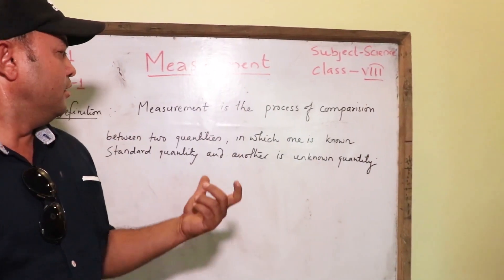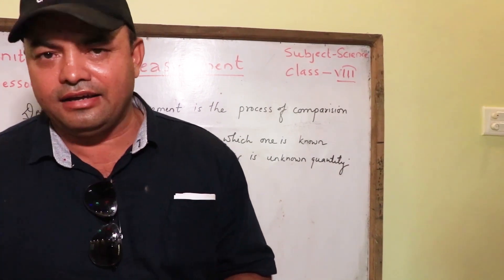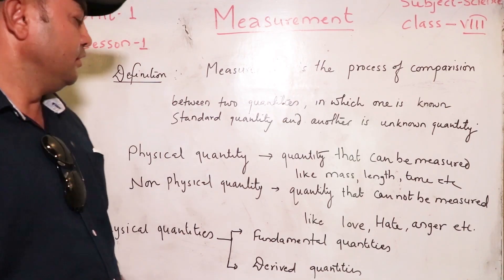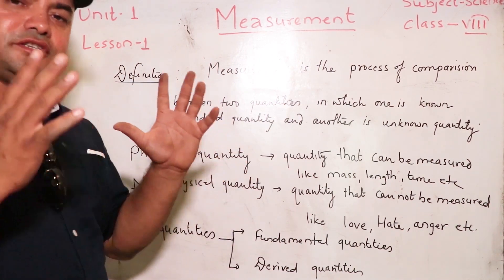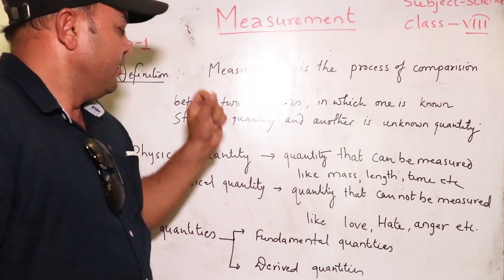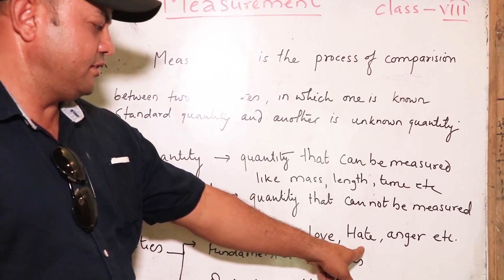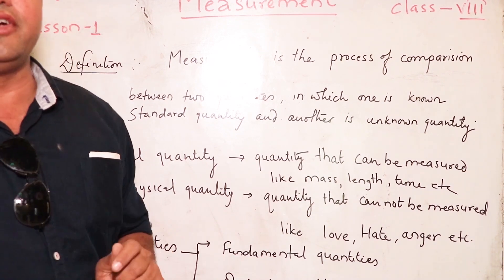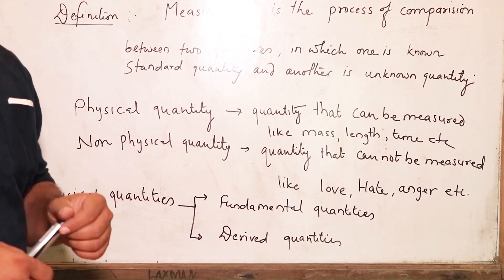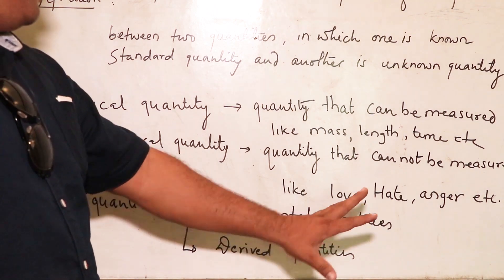Hence, under this topic, we will study about physical quantities only. Physical quantities which can be measured directly or indirectly are of two types: fundamental quantities and derived quantities. Measurable quantities — like mass, length, time, force, etc. — are called physical quantities. Non-physical quantities, like love, hate, and anger, cannot be measured. All physical quantities are further divided into two categories: fundamental quantities and derived quantities.